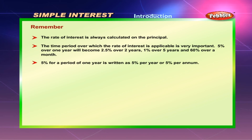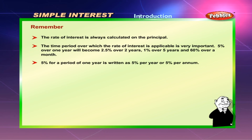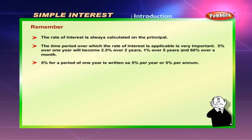Remember, the rate of interest is always calculated on the principal. The time period for which the rate of interest is applicable is very important. 5% over 1 year will become 2.5% over 2 years, 1% over 5 years, and 60% over a month. 5% for a period of 1 year is written as 5% per year or 5% per annum.